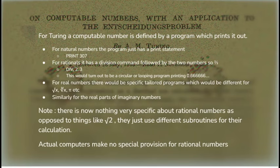Now, note that in the Turing picture, there's nothing very specific about rational numbers. The distinction between reals and rationals had been crucial in ancient Greek maths. But from Turing's point of view, the only difference is the specific subroutine you use to calculate them. You use a division subroutine in one case, and square root subroutine in another. And actual computers make no provision for rational numbers.